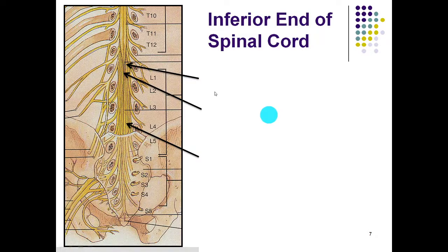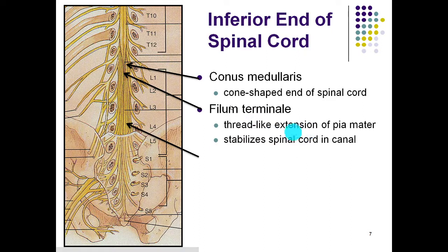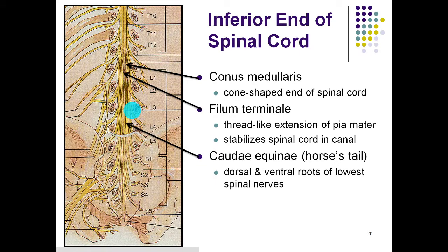Here on this diagram you can see it better. Here is the spinal cord coming down; you can see it pinches off at the conus medullaris. The filum terminale are all those extensions of the pia mater — it's going to help stabilize the spinal cord. All of these branches coming off of the conus medullaris are called the cauda equina, or horse's tail, and they consist of the dorsal and ventral roots of the lowest spinal nerves that are part of the peripheral nervous system.